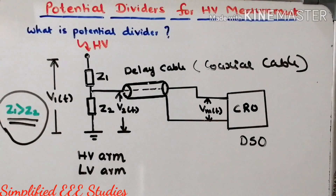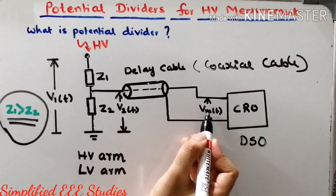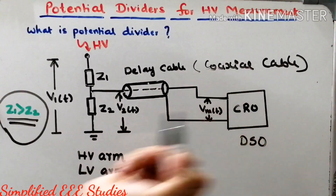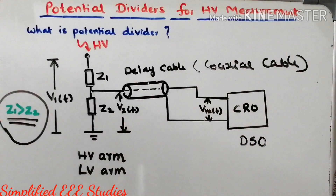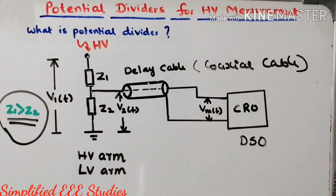In addition to that, you have to consider the meter impedance, which will be very small. Whenever you include the meter, we have to account for its impedance. It is negligible, but some part has to be added while doing the design.